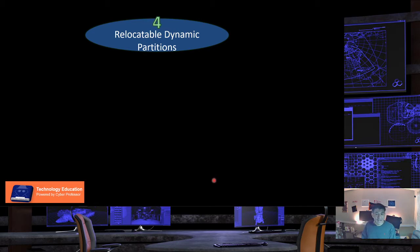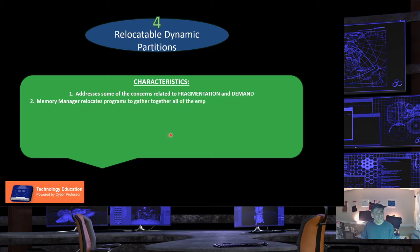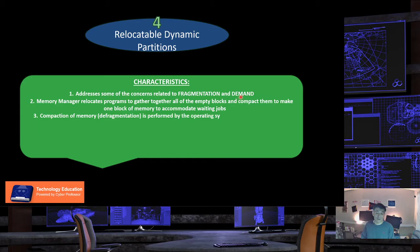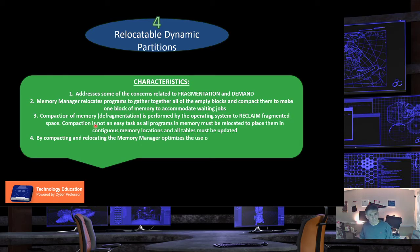The fourth and final scheme is relocatable dynamic partitions. It addresses concerns related to fragmentation: the memory manager relocates programs to gather all empty blocks and compact them into one block of memory to accommodate waiting jobs. Compaction, or defragmentation, is performed by the operating system to reclaim fragmented space. This is not an easy task — all programs in memory must be relocated to contiguous memory locations and all tables must be updated. Compacting and relocating optimizes memory use and improves throughput, but requires more overhead.